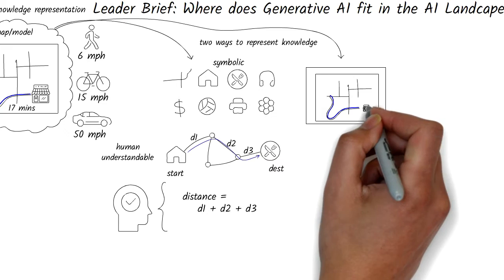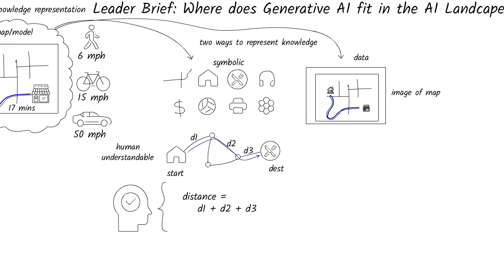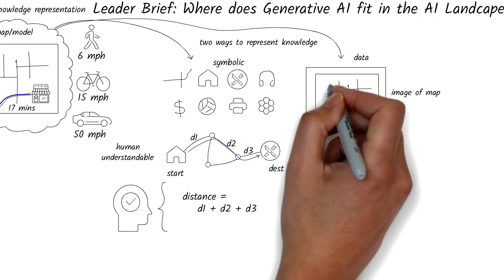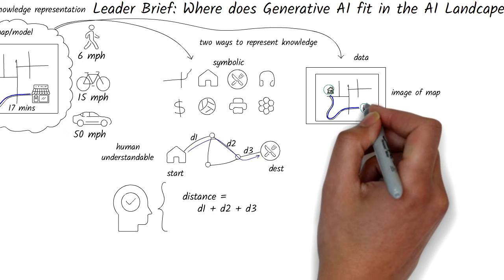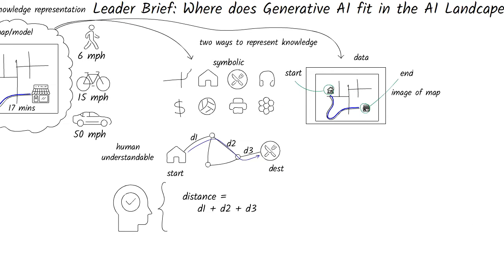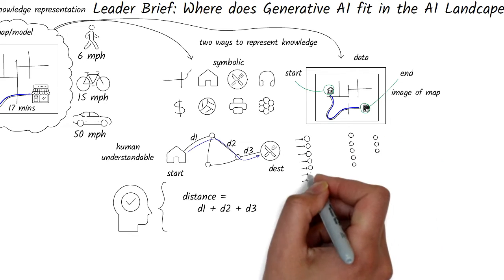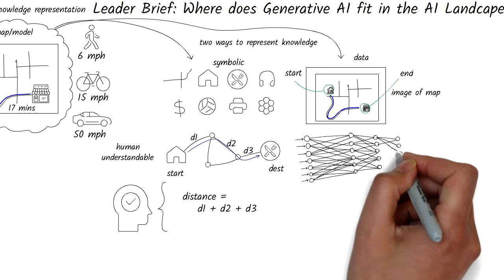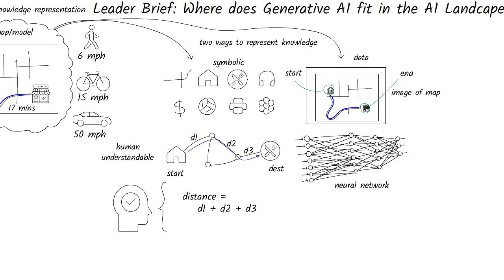The other way to represent knowledge is plain data, such as the pixels in the picture of a map. As data, your home is a group of a few pixels, and so is the restaurant and the roads. In this case, the computer has represented this map in a complex model called a neural network.